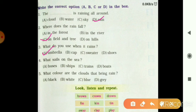Fourth, what sails on the sea? So answer is B. Then, what color are the clouds that bring rain? Clouds ka color, so white. Okay student.